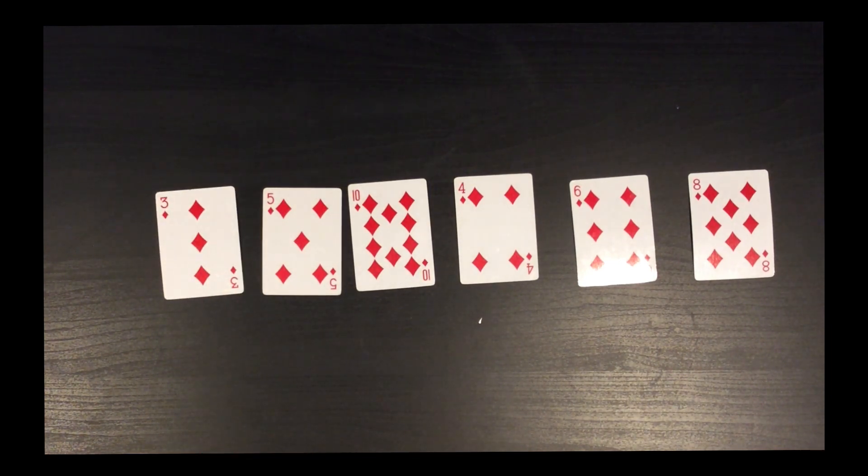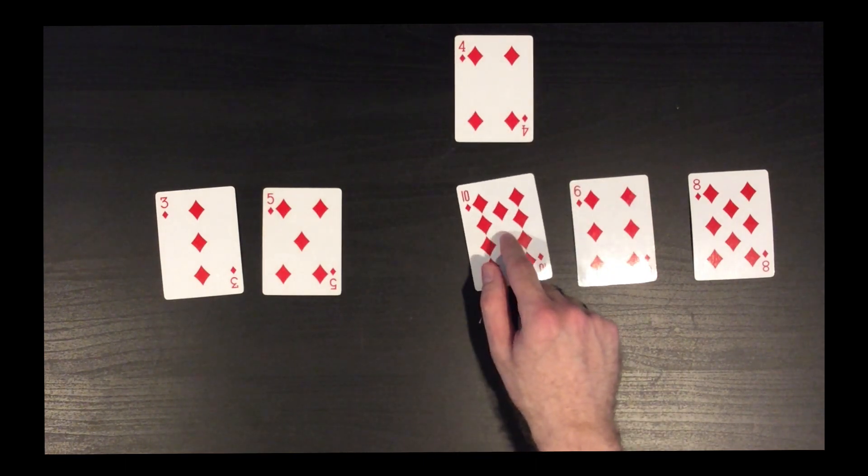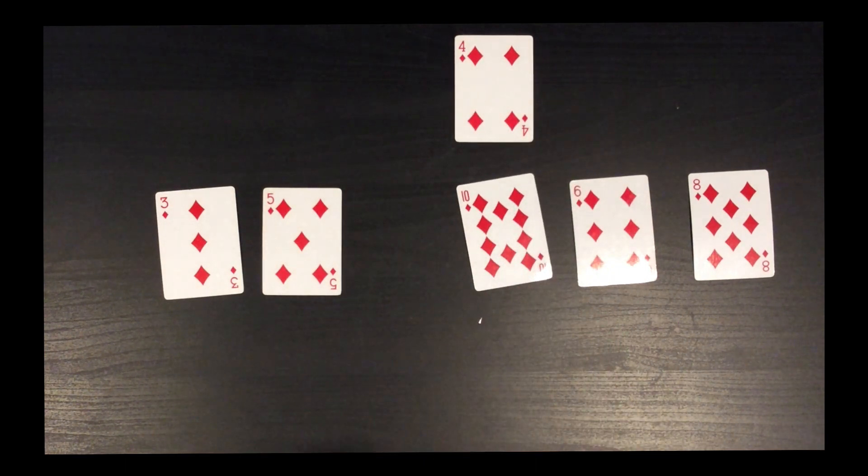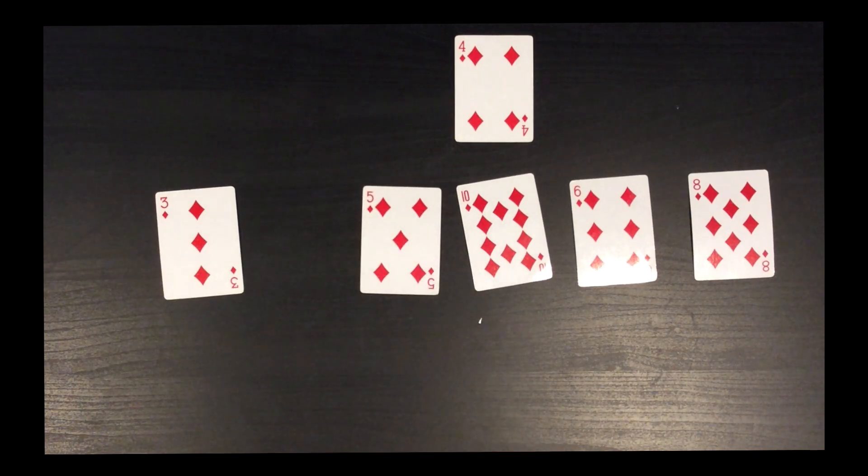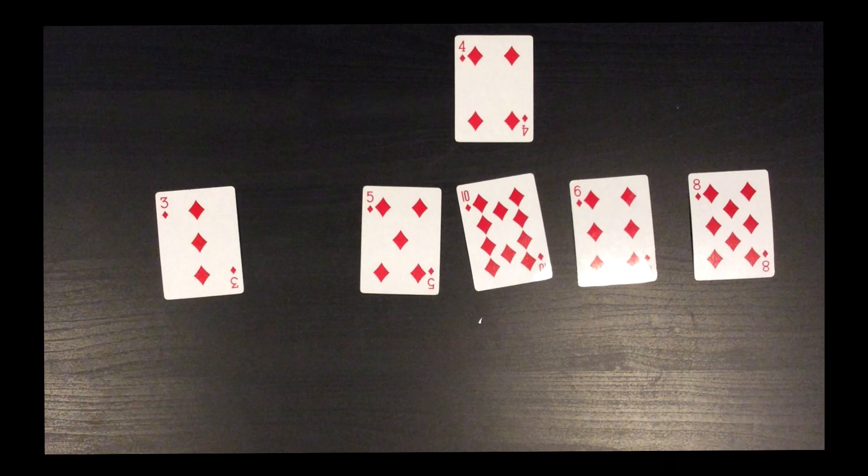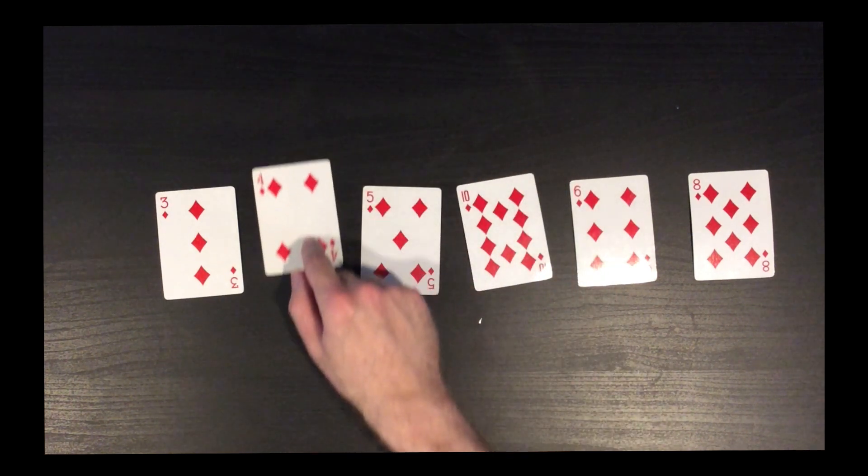We are now up to the next round of insertion sort, where we make the four the chosen card. We compare it to the 10. It is less than the 10. So we move the 10 over. We compare the four to the five. Since it's less than the five, we move the five. But now comparing the chosen card to the three, the chosen card is greater than the three. And this is the next rule of insertion sort, which is when the chosen card is greater than the card we're comparing it to. Then the round ends and we simply move the chosen card into the gap.